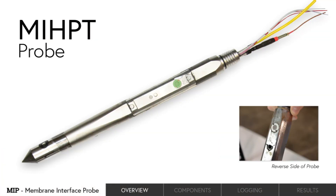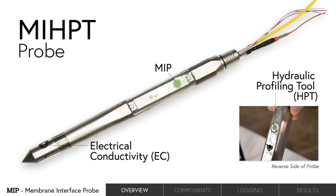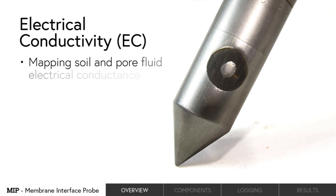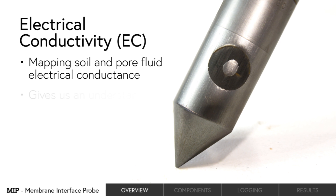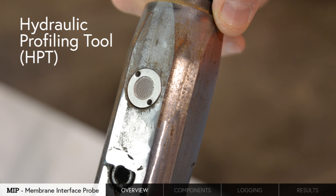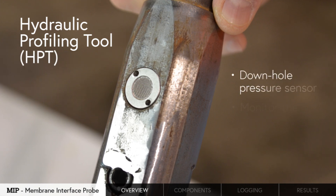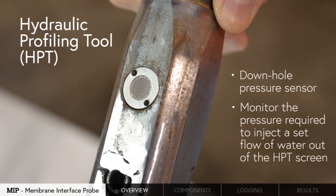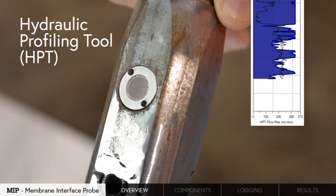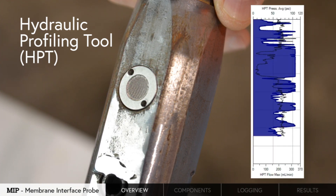The Geoprobe MI-HPT probe combines the MIP system with two additional sensors: electrical conductivity or EC and the hydraulic profiling tool or HPT. The electrical conductivity dipole sensor is used for mapping soil and pore fluid electrical conductance, giving us an understanding of the subsurface lithology. The hydraulic profiling tool uses a downhole pressure sensor to monitor the pressure required to inject a set flow of water out of the HPT screen. The resulting pressure log is directly related to subsurface permeability.